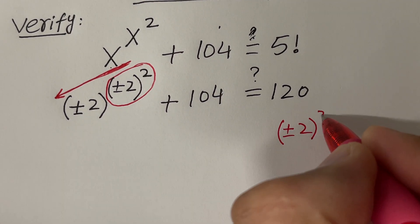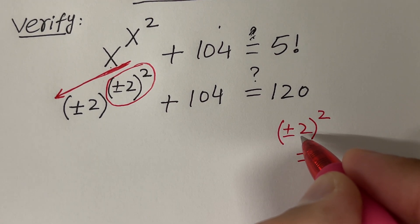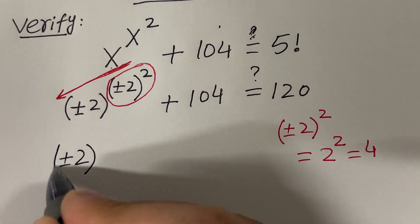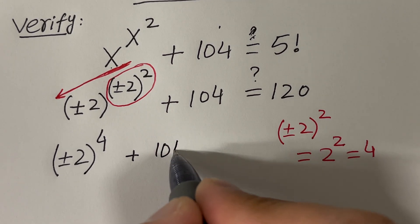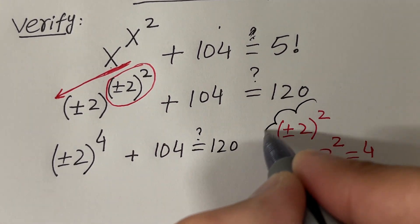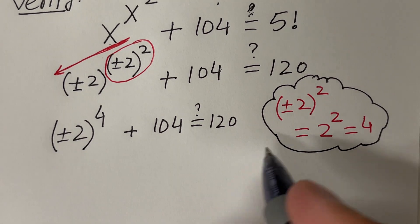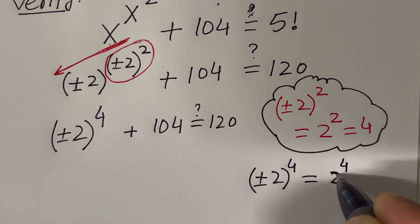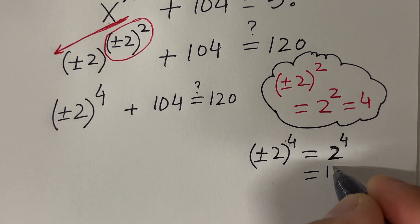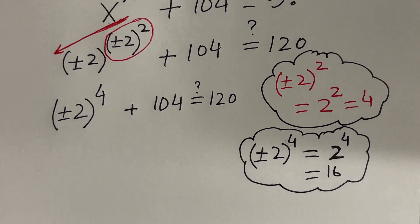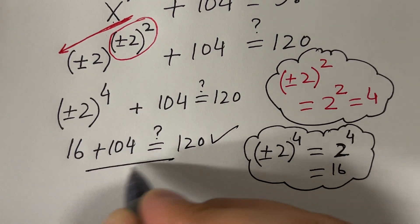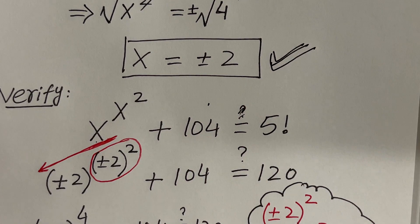Plus or minus 2 raised to the power 2: since 2 is even, the minus disappears. So this equals 2 raised to the power 2, which is 4. That means the first term becomes plus or minus 2 raised to the power 4, plus 104, equals 120. Plus or minus 2 raised to the power 4 — again, 4 is an even power, so that is 2 raised to the power 4, which equals 16. So 16 plus 104 equals 120. The answer is yes, confirming that x = ±2 are the solutions of the given equation.